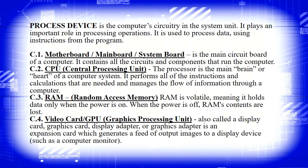Next, we have the process devices. These are the computer circuitry in the system unit. They play an important role in processing operations and are used to process data using instructions from the program. These include the motherboard, CPU (central processing unit), RAM (random access memory), and video card or GPU (graphics processing unit).